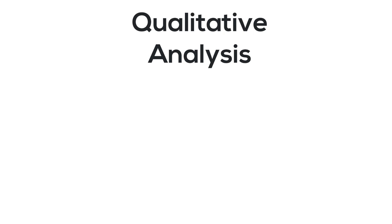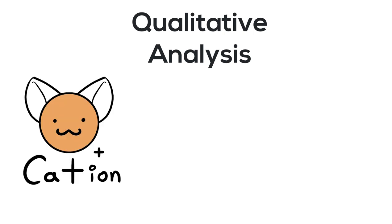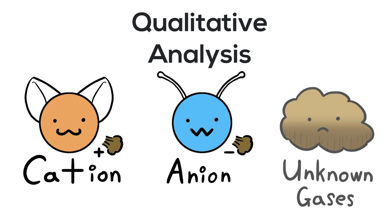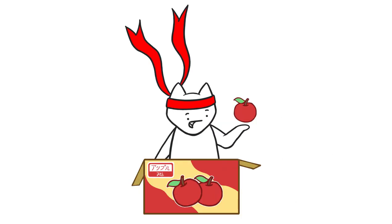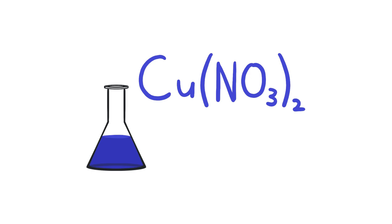In qualitative analysis, there are three main groups of tests which test for cations, anions, and gases. Let's take a look at an example to see qualitative analysis in action. Suppose that the unknown solution is copper-2-nitrate.